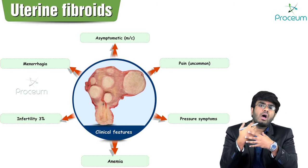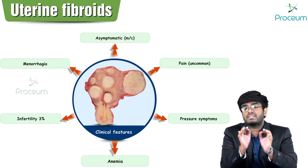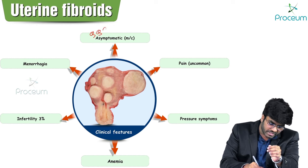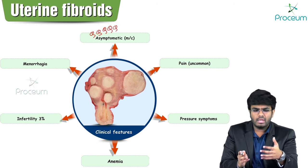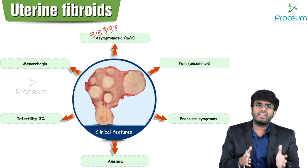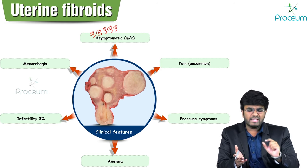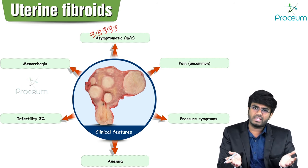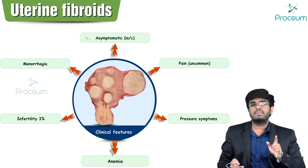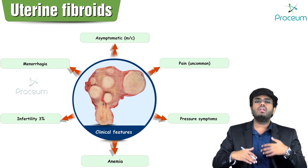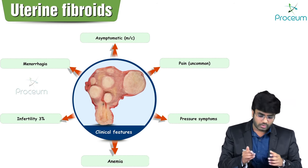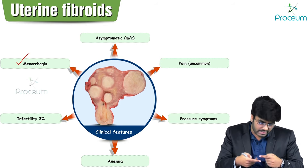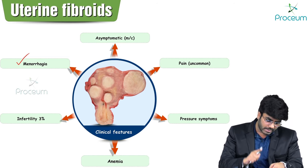Most common presentation is asymptomatic — most females don't even know they have a fibroid. By 50 years of age, 80% of females have fibroids, often small and completely asymptomatic. If there is a symptom, the most common symptom is menorrhagia — heavy menstrual bleeding.